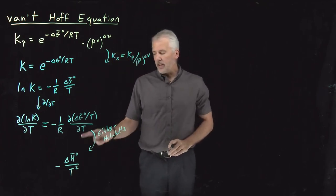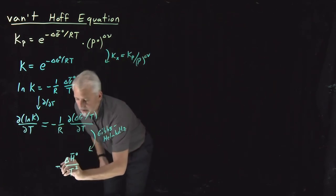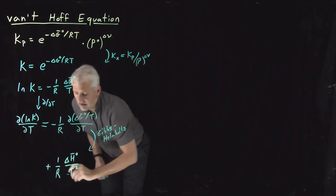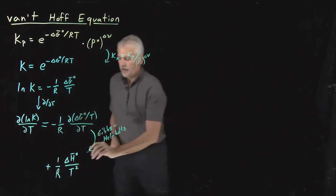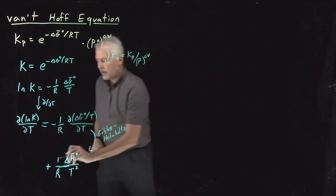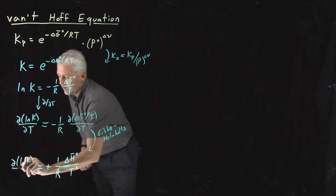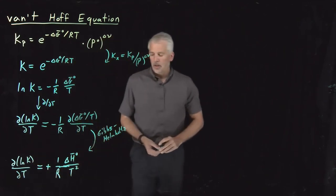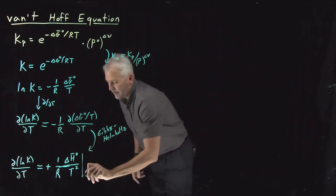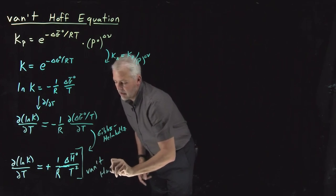So I've only taken the result of the temperature derivative. I now have to multiply by negative 1 over R. So let me just write, the negative becomes a positive, negative 1 over R becomes positive 1 over R delta H over T squared. So that's what I've got on the right side. Left side is still derivative of log of K with respect to temperature. So Gibbs-Helmholtz is what led us to this result. This result itself is called the Van't Hoff equation.